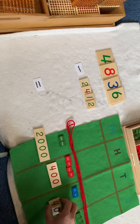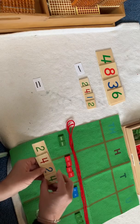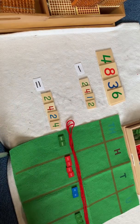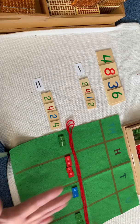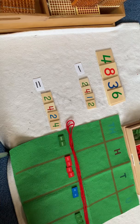And we put all our numbers together. Do the magic slide. And here's our answer. 2,424. That's the stamp game. Static subtraction. Easy, easy.